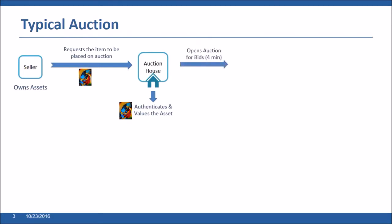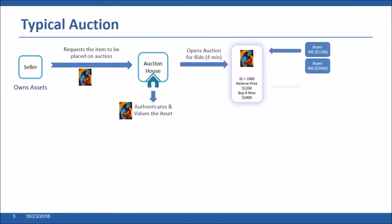They would specify some criteria for the auction — in our case it's really just the duration of the auction. Then bidders would come in and place bids. We do allow for a reserve price to be set and a buy-it-now price to be set for the item. All bids are recorded into the blockchain. If a bid is below the reserve price, it will be rejected by business logic we built into the solution.